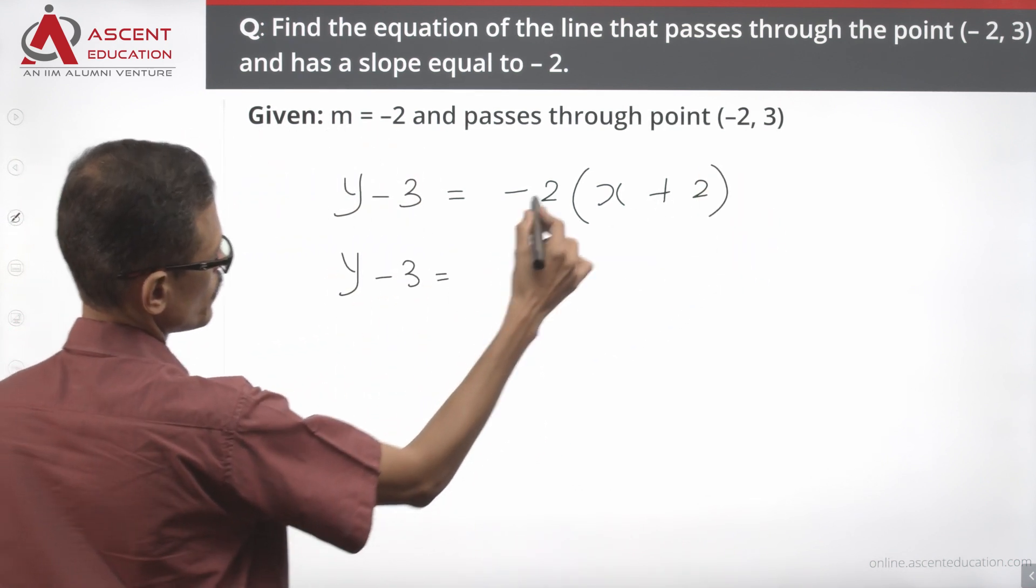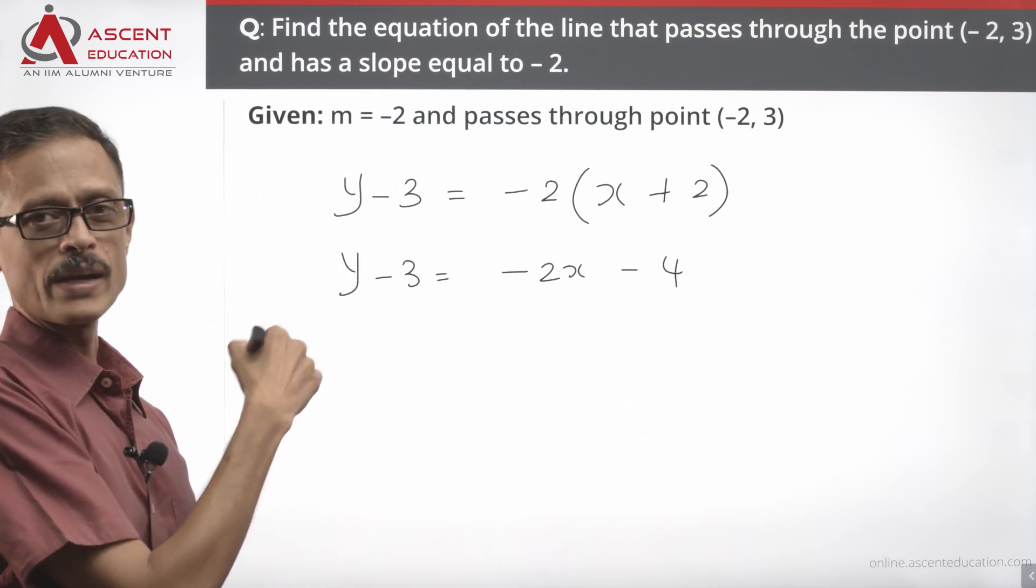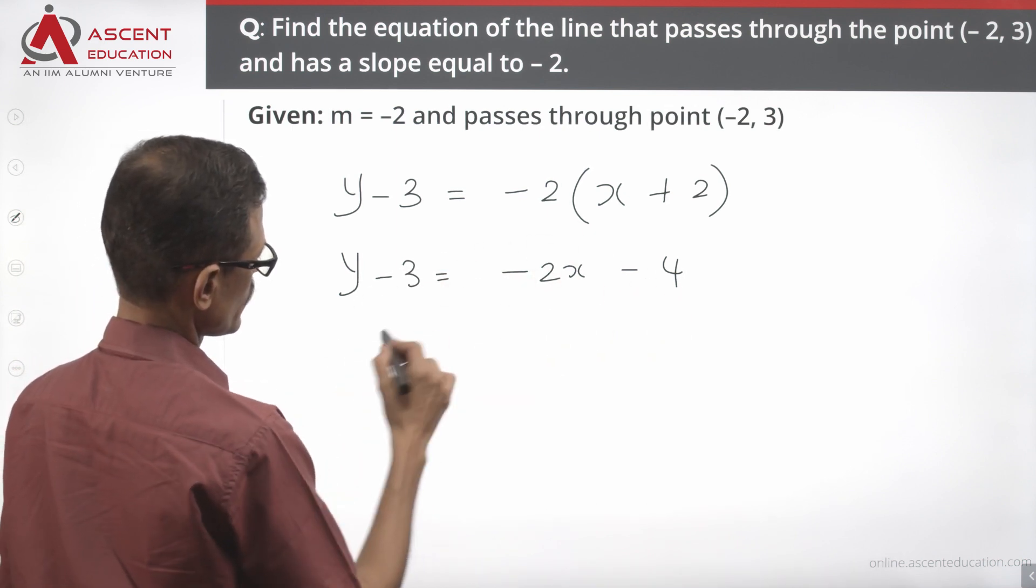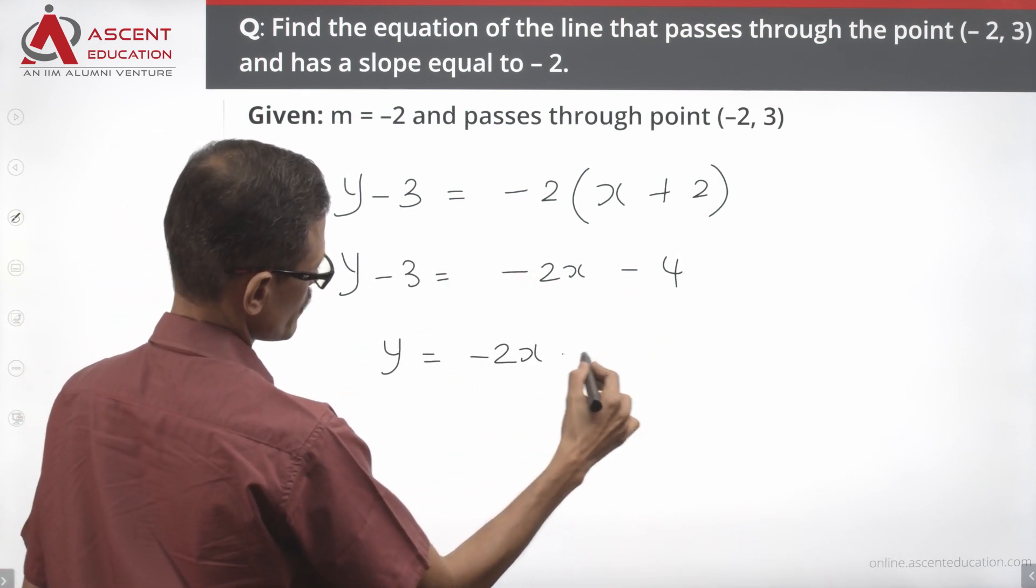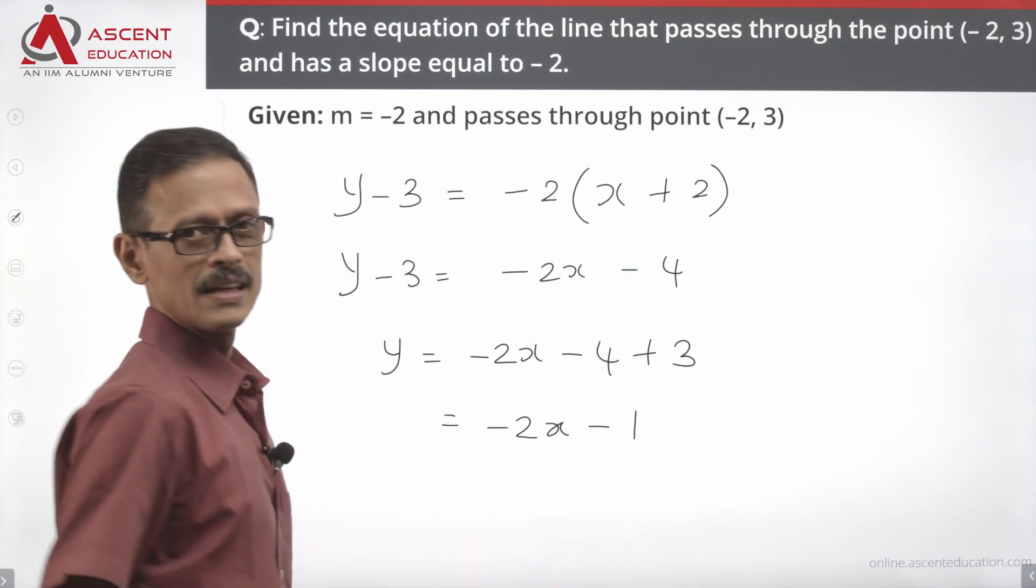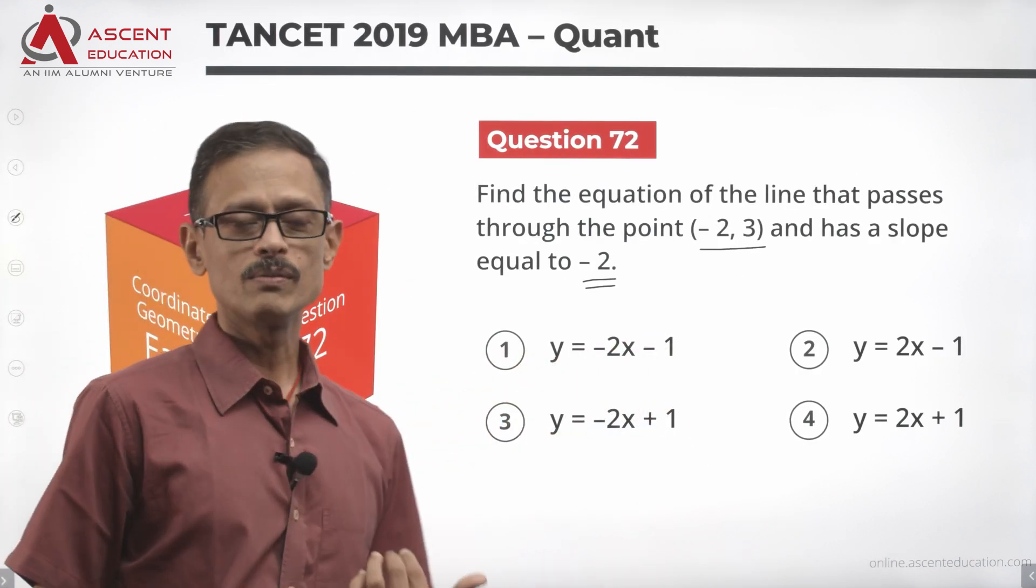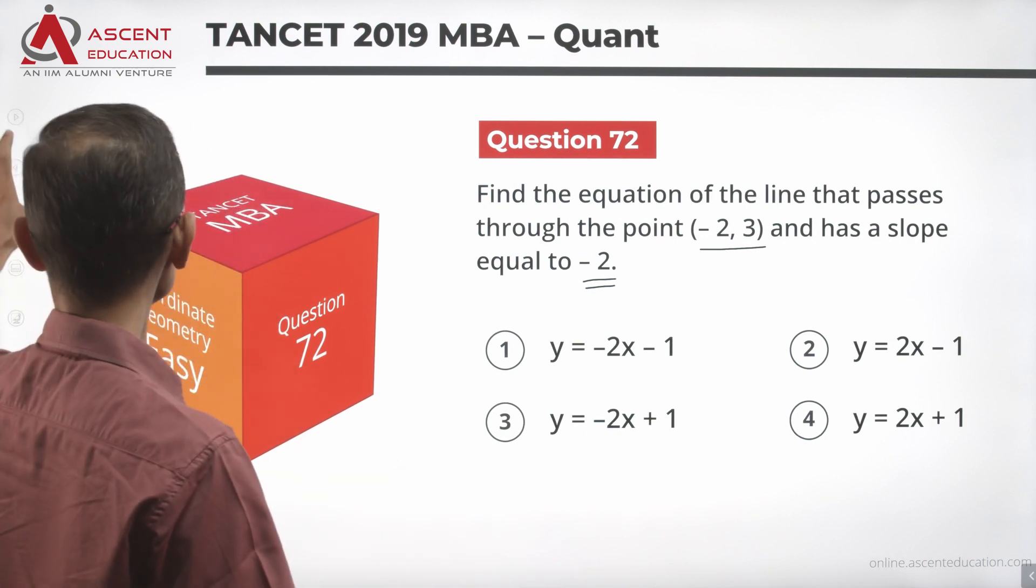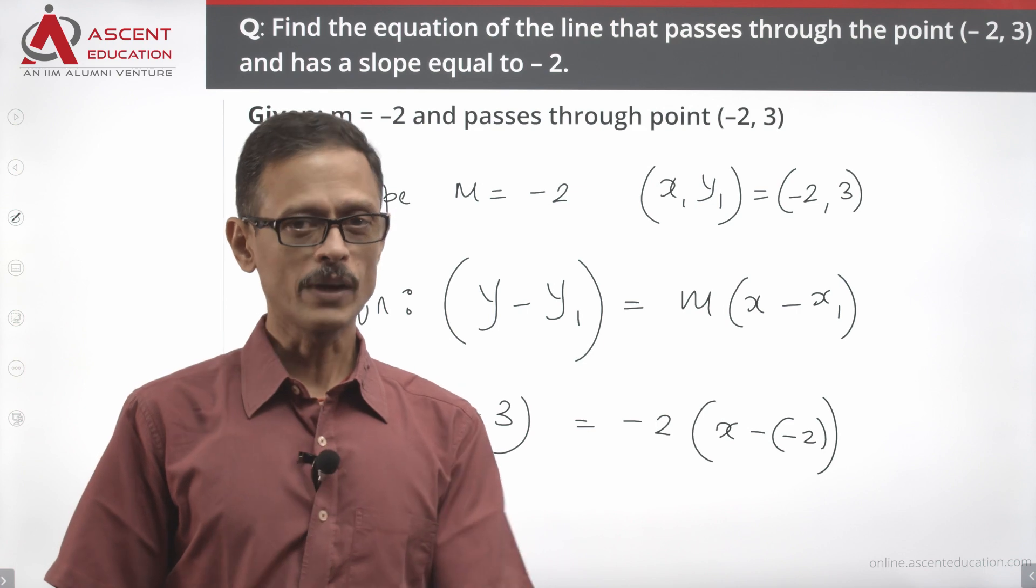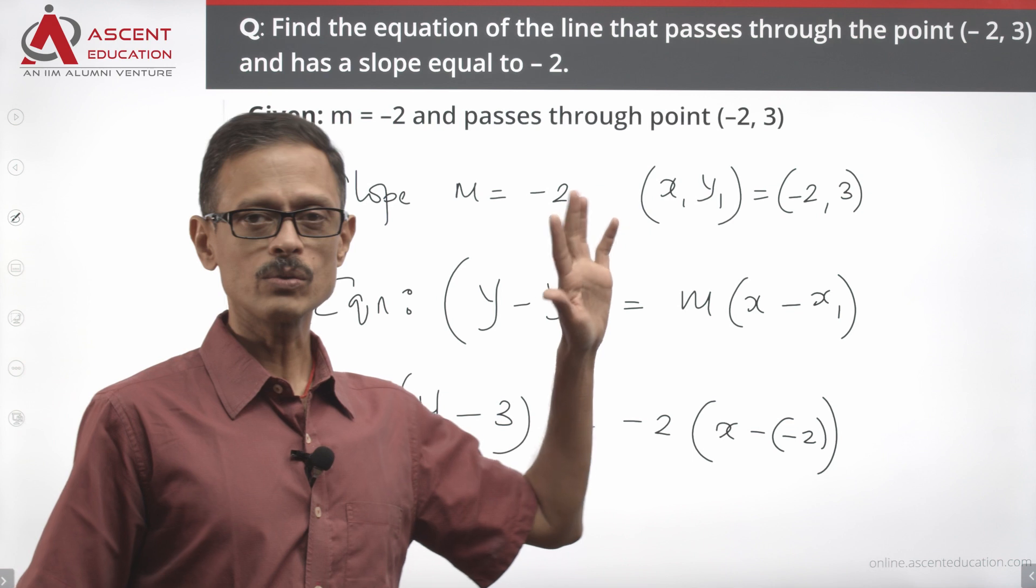So y minus 3 equals minus 2x minus 4. Adding 3 to both sides, y equals minus 2x minus 1. Answer option 1 is y equals minus 2x minus 1, which follows the formula y minus y₁ equals m times x minus x₁.